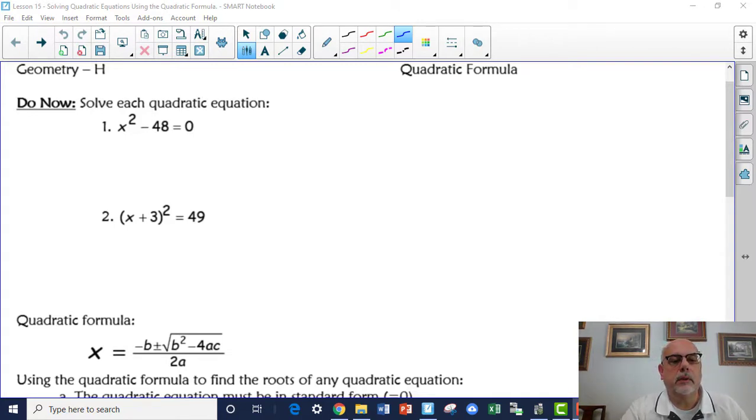On number one, x squared minus 48 equals zero. You could move the 48 to the other side and square root both sides. So let's do that.